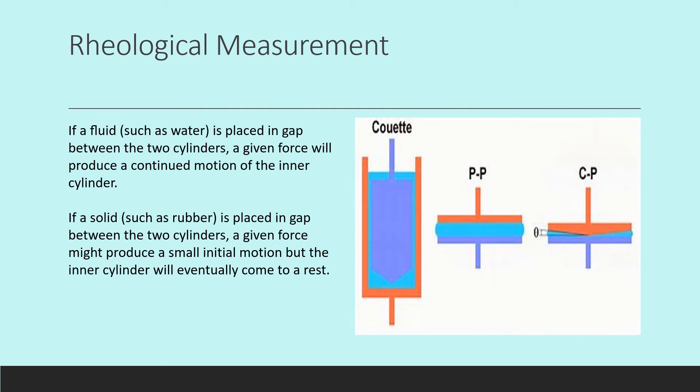So how do we measure the flow of matter? For one, we can place a fluid in between these two cylinders here on the left. And if we produce a continued motion of the inner cylinder, this blue one right here, if we spin that around in a circle, it will tell us the viscosity of the fluid, so the willingness of it to flow.